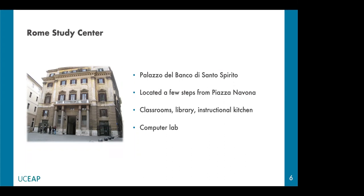The building was completed in the 1600s and is named Palazzo del Banco di Santo Spirito. It is located a few steps away from Piazza Navona, which is one of the major squares in Rome, and hosts six classrooms, a UC library, a structural kitchen used for cooking classes, and a computer lab.